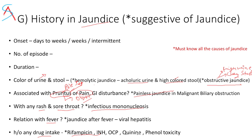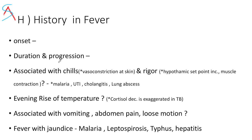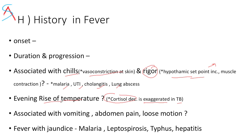For fever history, ask onset, duration, and progression. Ask whether associated with chills — caused by vasoconstriction at the skin — or rigors, caused by increase in hypothalamic set point resulting in piloerection, muscle contraction presenting as shivering and teeth chattering. Common causes of fever with chills are malaria, UTI, cholangitis, and lung abscess. Ask about rise in temperature — evening rise occurs in tuberculosis due to exaggerated cortisol decrease and BMR increase. Ask whether associated with vomiting, abdominal pain, loose motions. Fever with jaundice should raise suspicion of malaria, leptospirosis, typhus, or hepatitis.